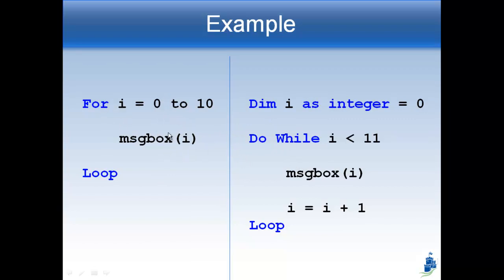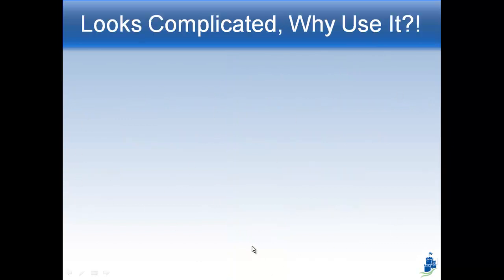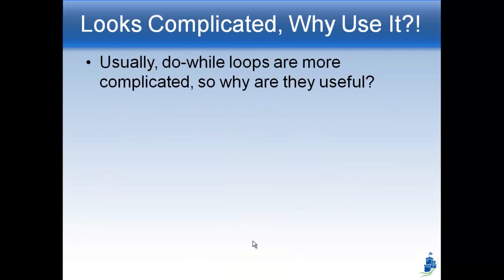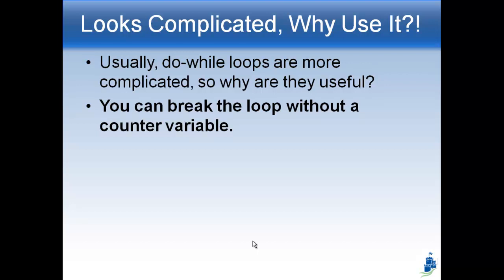So the question is, why is the do-while loop nine lines long and super complicated when the for loop is simple and easy? What do we want to use a do-while loop for? The point is that you can break the loop without a counter variable — you can do the do-while loop without having something that goes up by one every time. For example, let's say I have some variable called sum. I'll declare it and say sum starts as one. Then, and this is the key part, I'll say do-while sum is less than 1000. And instead of sum equals sum plus one, I'll say sum equals two times sum. Sum doesn't go up by one or two — it doubles.